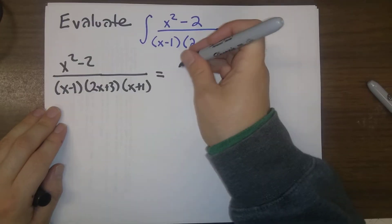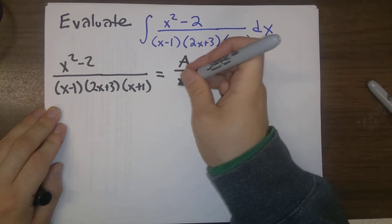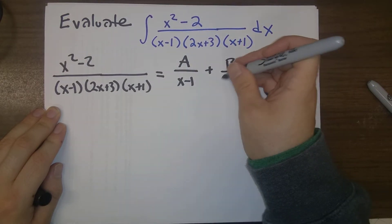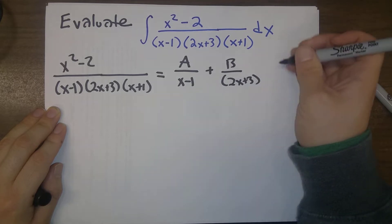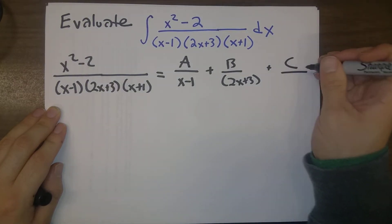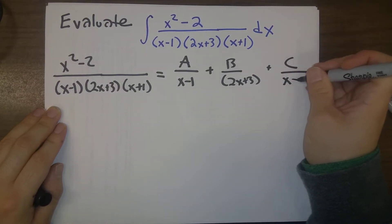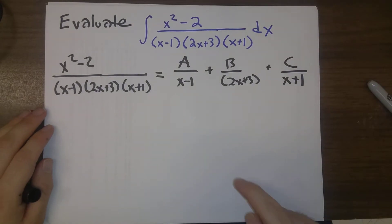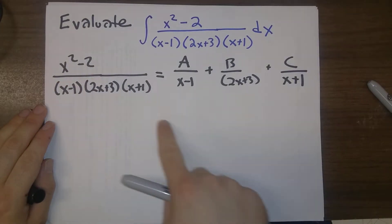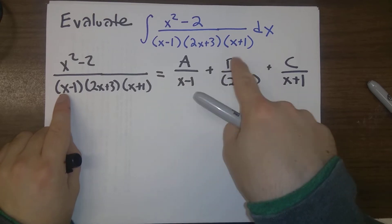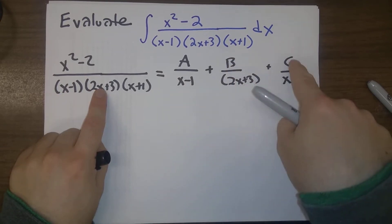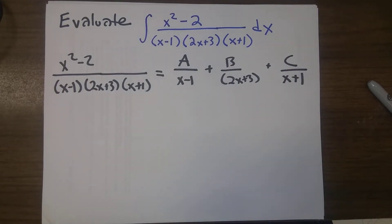So we are guaranteed by the method of partial fractions that there are constants, now A, B, and C, three constants now, such that this is equal to A over that first factor plus B over that second factor plus C over that third factor.